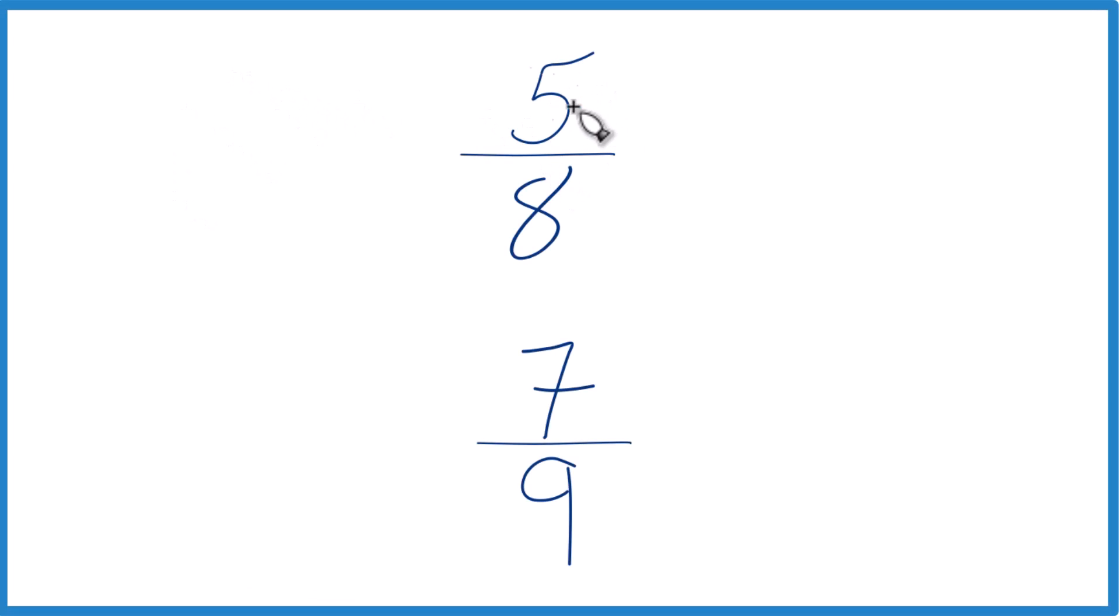Here's how you figure out which one of these fractions is greater, 5 eighths or 7 ninths. So you could just take a calculator, divide 5 by 8, get a decimal, 7 by 9, get a decimal, and just compare the decimals. That'll tell you whether 5 eighths is greater than or less than 7 ninths.